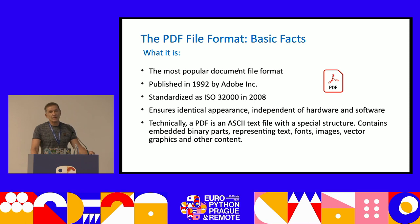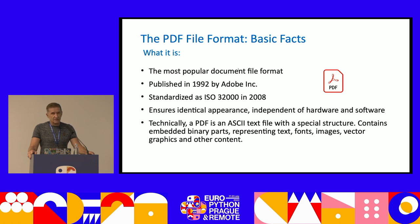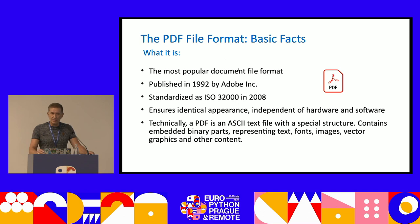Technically, a PDF is an ASCII text file in a special structure. If it contains binary data — and it usually does — those binary data represent its content: the text and the fonts that specify how the text should be presented. It also contains images, vector graphics, and today even multimedia content.